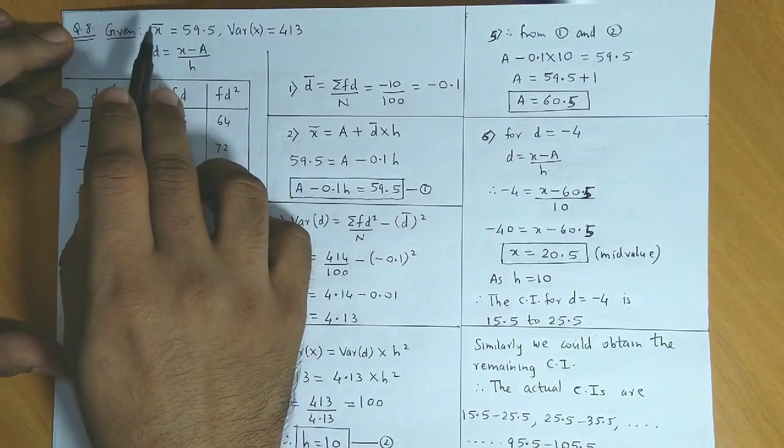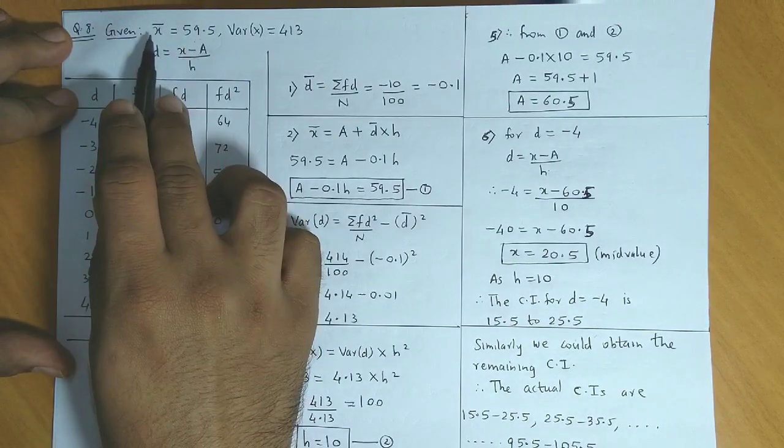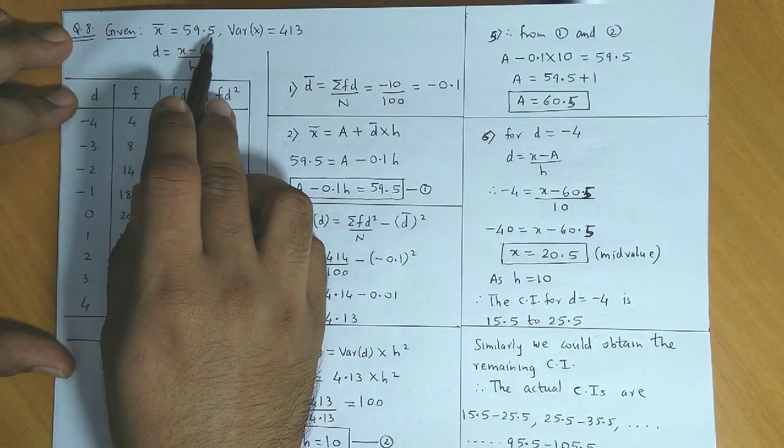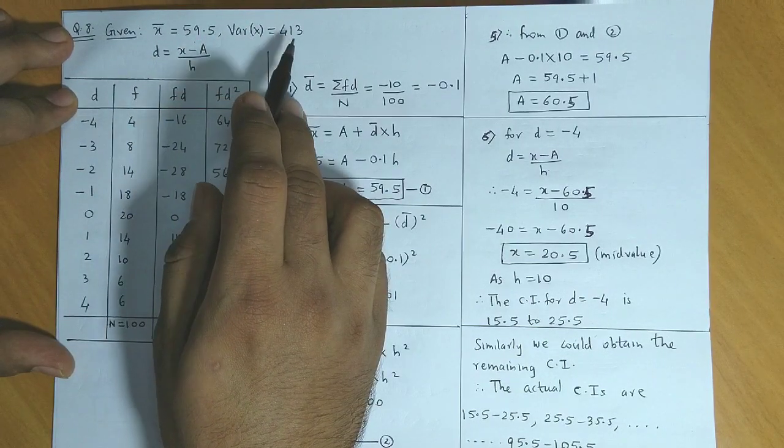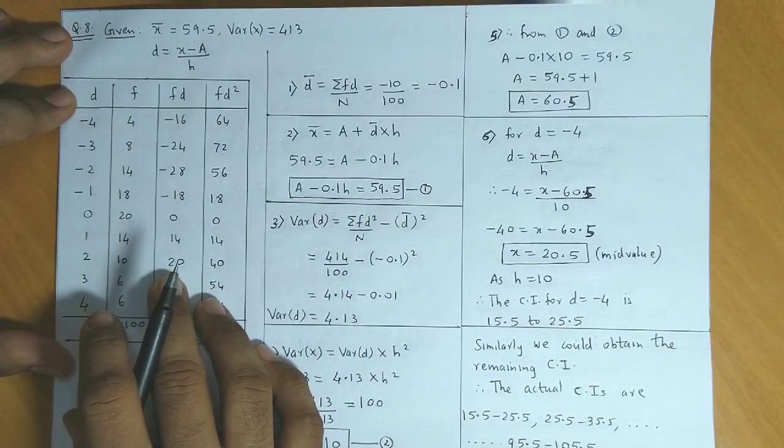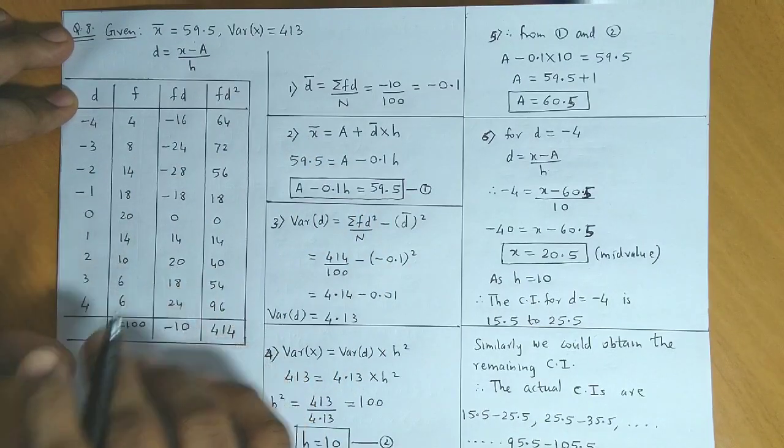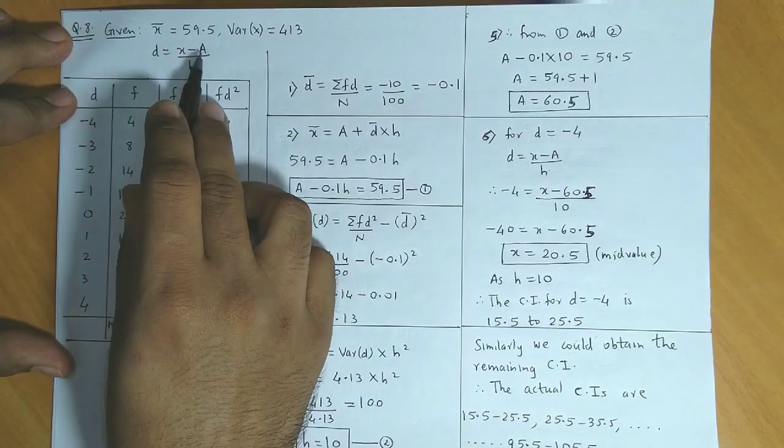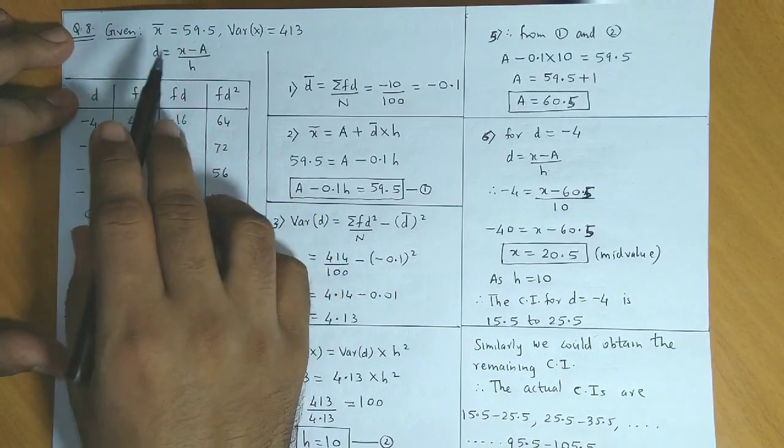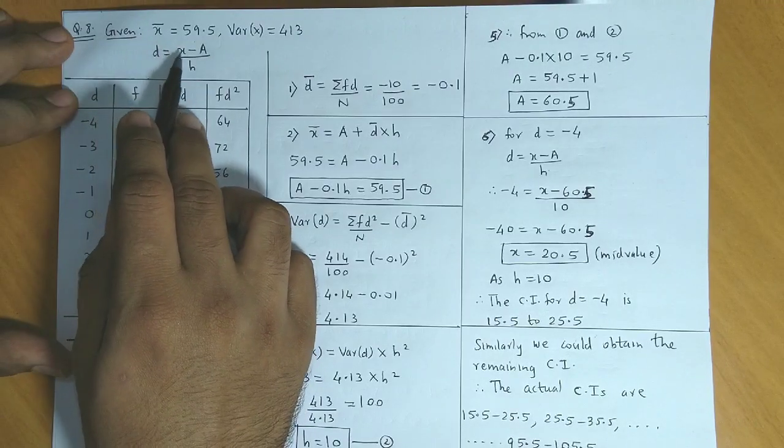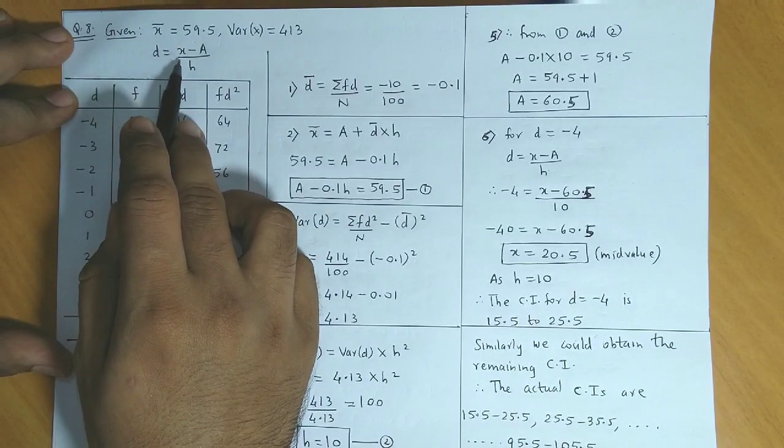This distribution's mean x̄ is given as 59.5 and variance of x is given as 413. We need to find the actual class intervals. To find the actual class intervals, we need to obtain the values of a and h. Remember that x here denotes the mid values.